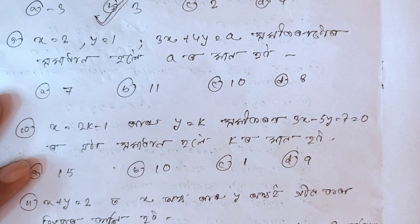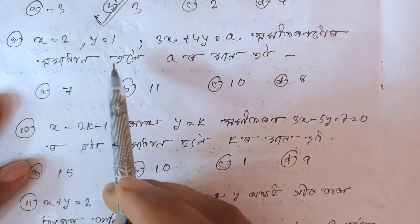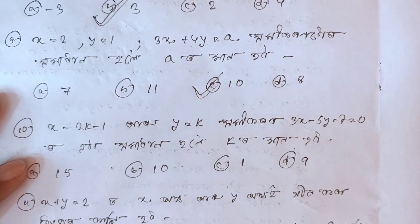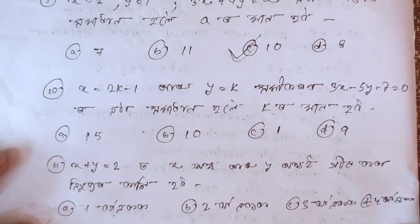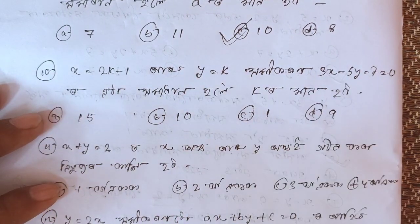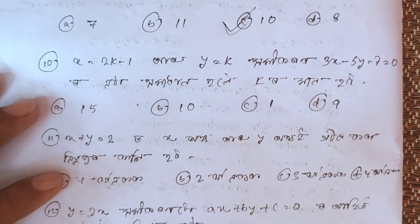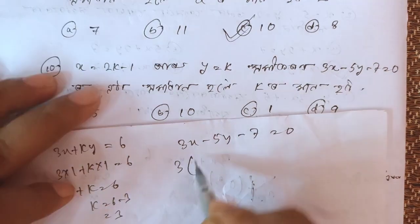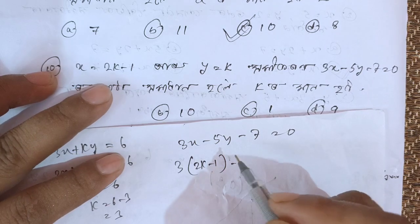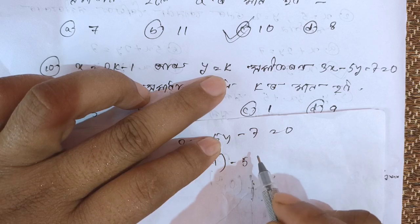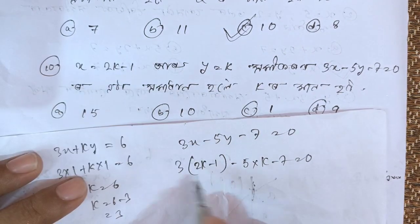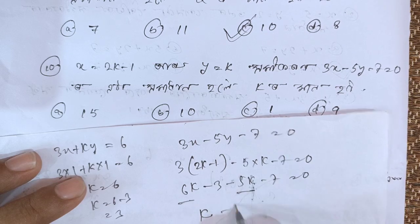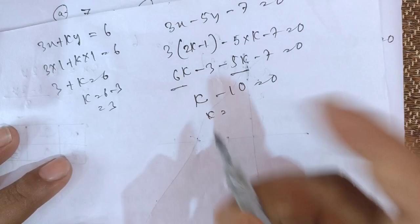Now this is equal to 2y. 3x plus 4y equals a. This is equal to 2y is equal to 100. y is equal to 1. 6 is equal to 40, so it is equal to 2. This is equal to y equals k. Then 3x minus 5y minus 7 equals 0. The x form is 2k minus 1, minus 5 into y is k minus 7 is equal to 0. The answer is 2.